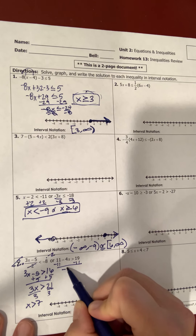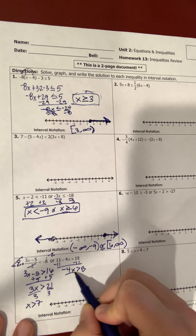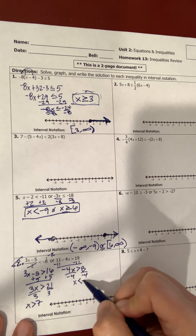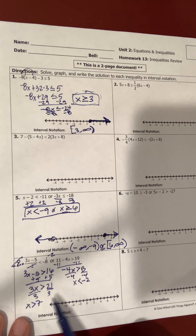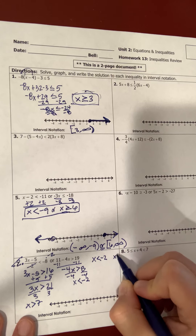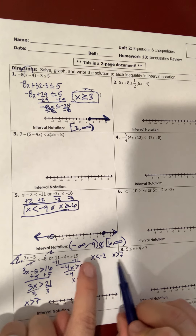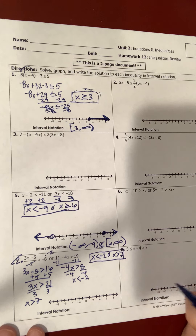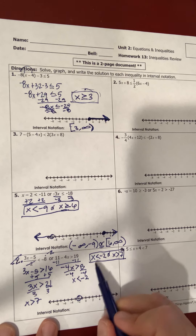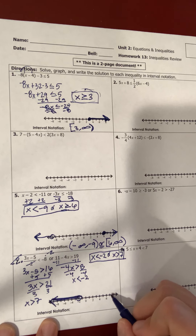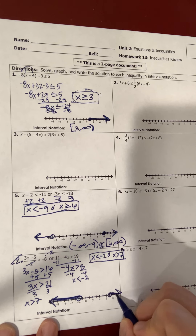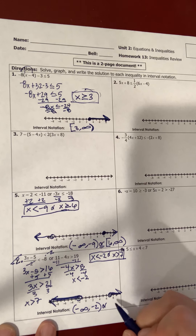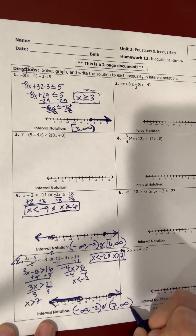Now I'm going to solve for the other x. I subtract 11 on both sides and I'm left with negative 4x is greater than 8. When I divide both sides by negative 4, that sign switches to x is less than negative 2. These are not written in the correct order, so I have x is less than negative 2 and x is greater than 7. They go apart from each other, so it's an or statement. In interval notation: negative infinity to negative 2 with a parenthesis, or 7 with a parenthesis to infinity with a parenthesis.